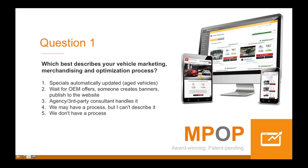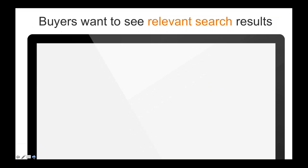People are always finding different ways to buy cars. Why do dealers continue to make it difficult for customers? Most people are buying a car on a monthly payment — so show them the monthly payment. Let me show you what I mean: buyers today are looking for relevant search results.